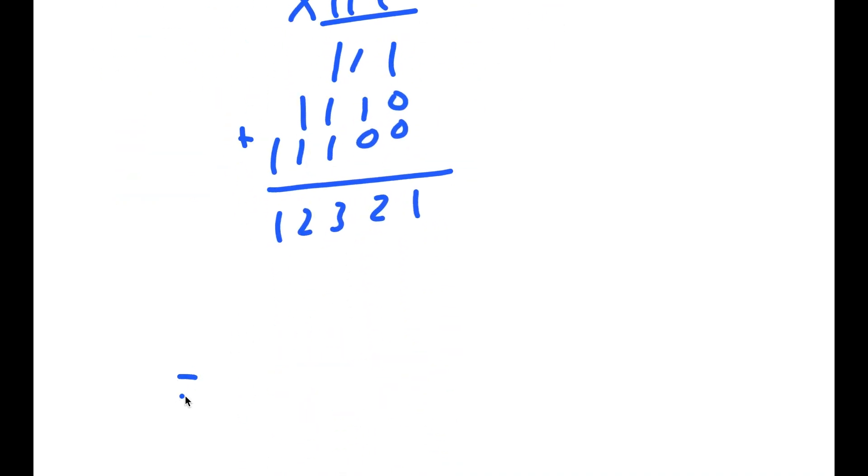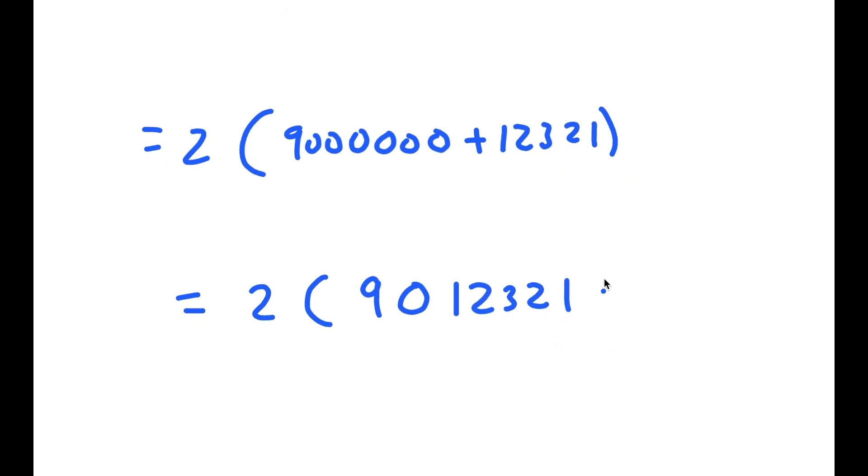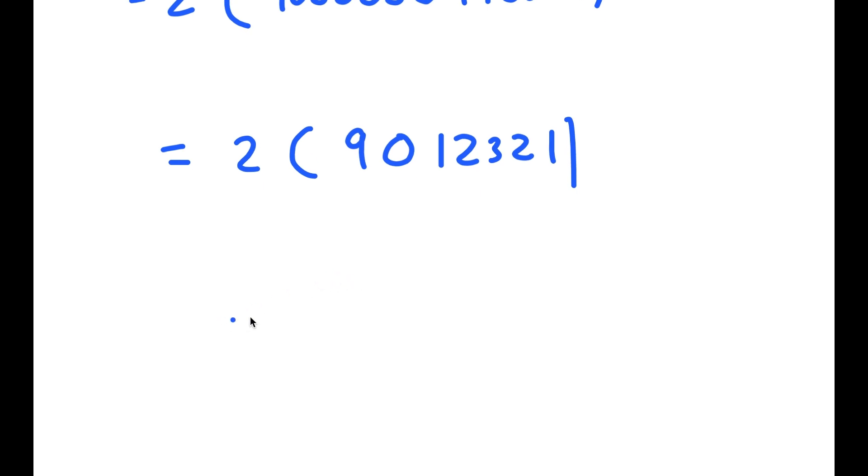So I have 2 times 9,000,000 plus 12,321, which is just 2 times 9,012,321. So 2 times this is going to be 18,024,642.